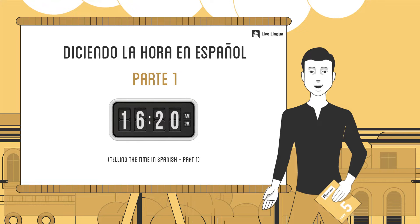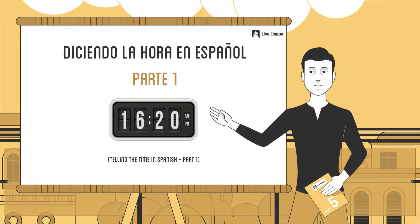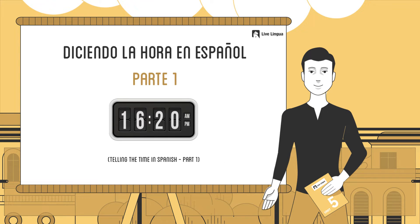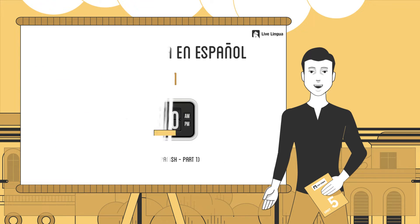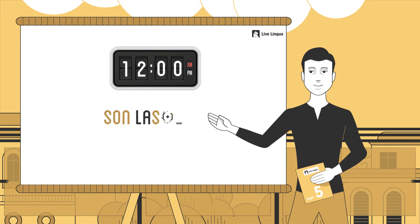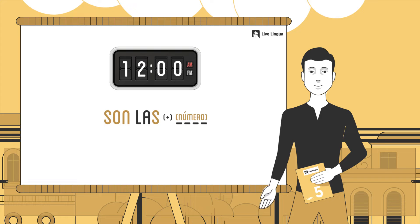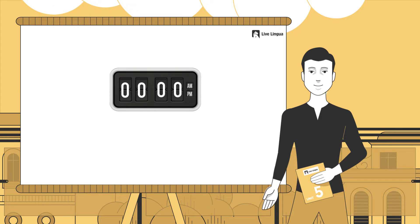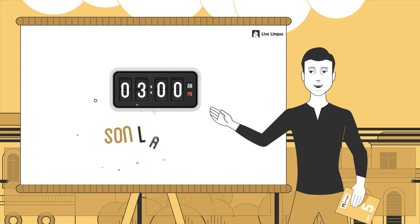Now let's combine the numbers you learned in the previous episode so we can tell the time. When telling time in Spanish, all you need to do is start the sentence with 'Son las' and add the number. For example, if you want to say it's 3 o'clock, you would say 'Son las tres.'